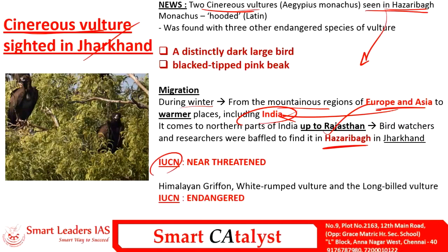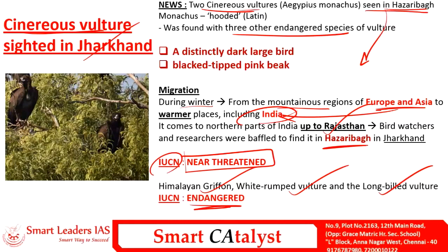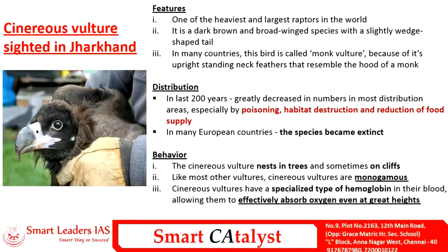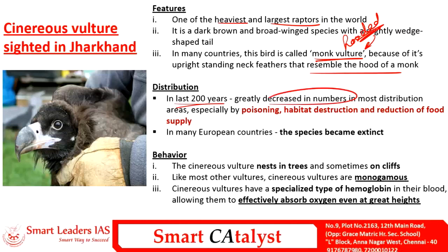The IUCN status of the Cinereous vulture is Near Threatened. They were also found alongside three other endangered species of vulture: the Himalayan Griffon, White-rumped Vulture, and Long-billed Vulture, all of which are classified as Endangered. The Cinereous vulture is one of the heaviest and largest raptors in the world. In many countries it is called the Monk Vulture due to its resemblance to a monk's hood. In the last 200 years its numbers have greatly decreased due to poisoning, habitat destruction, and reduction of food supply, and in many European countries the species became extinct.